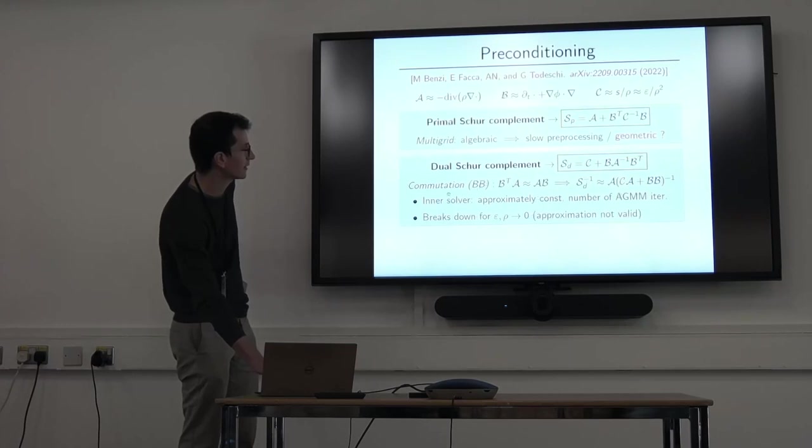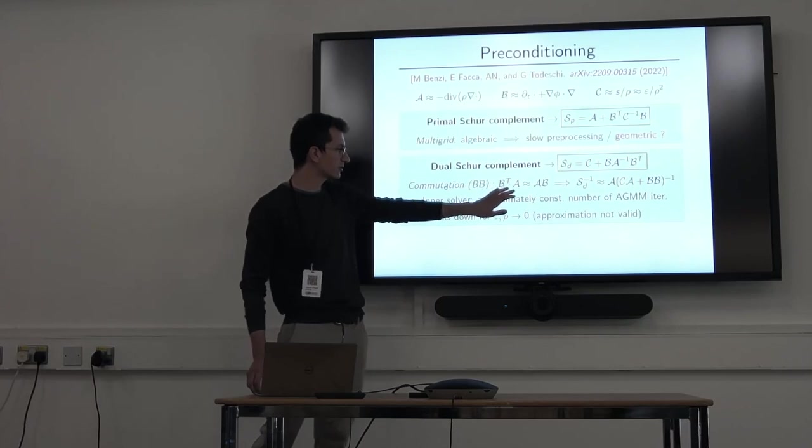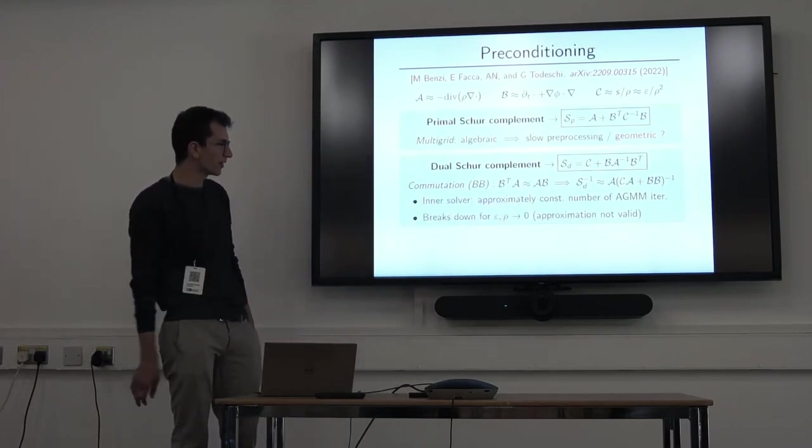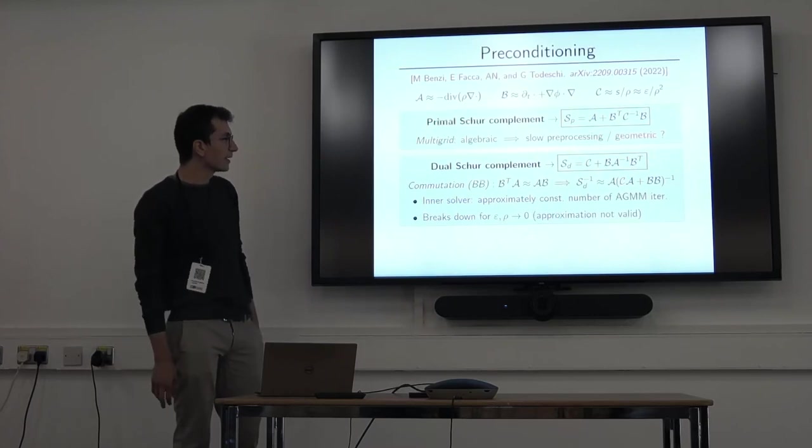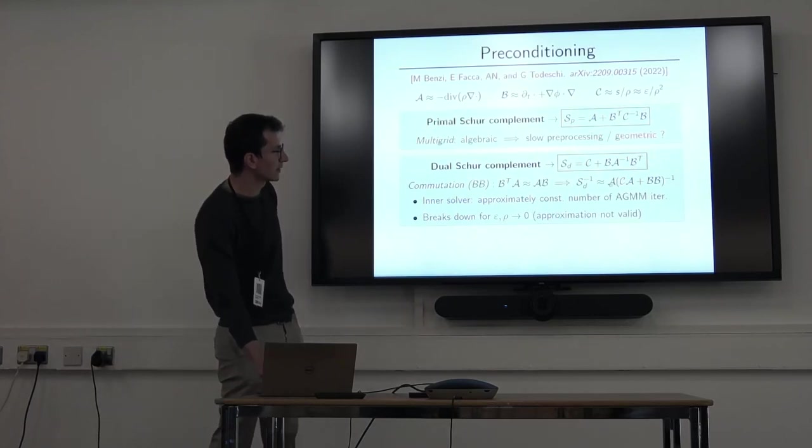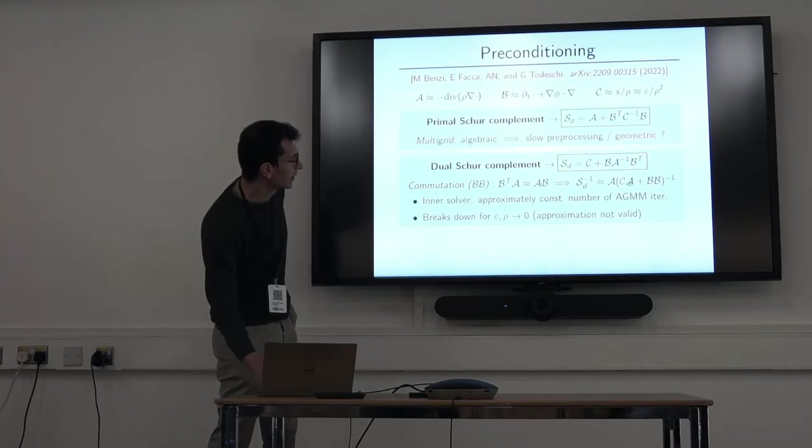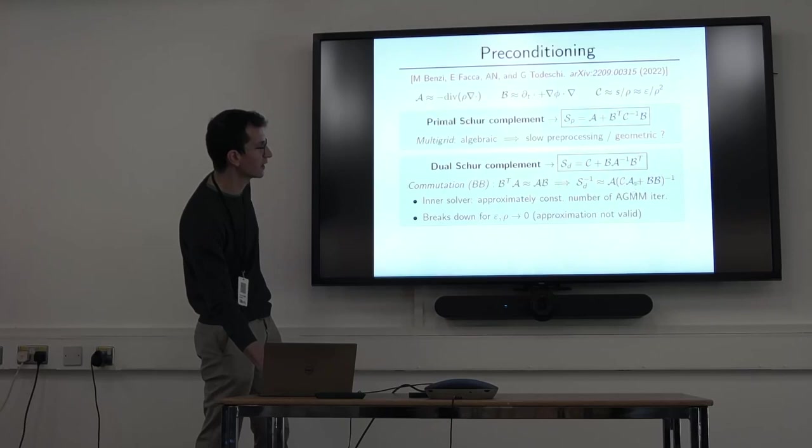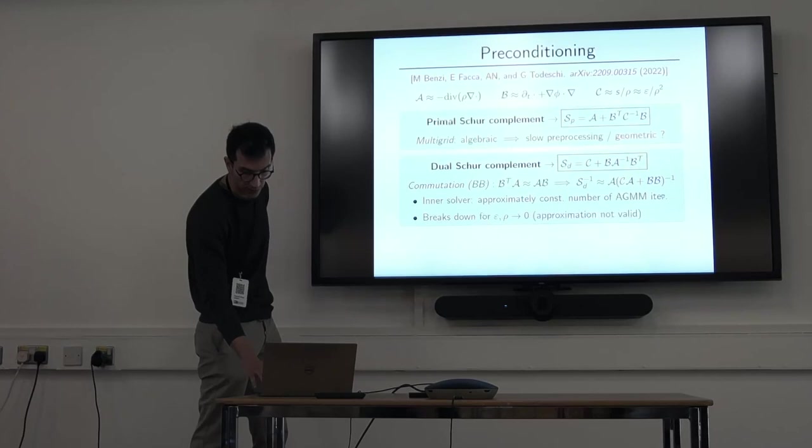And what we ended up using is something else. It's a preconditioner that's based on the observation that you have some commutation at the continuous level between the continuous operators, approximately, which allows you to make some approximation also in the inverse Schur complement. And namely, here, what the difference is that this C-metric becomes, comes outside of this, of this, is not in between the differential operators, and it behaves a bit better. So, we get a reasonable algorithm at the end.